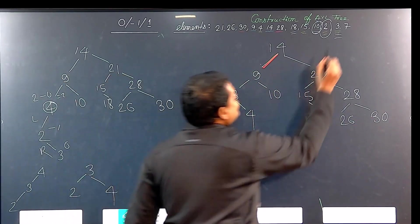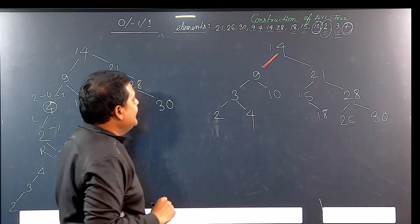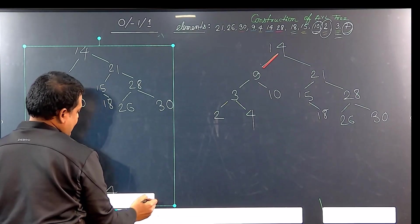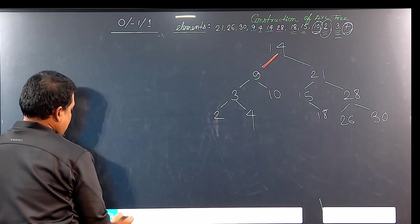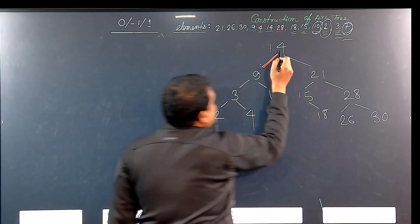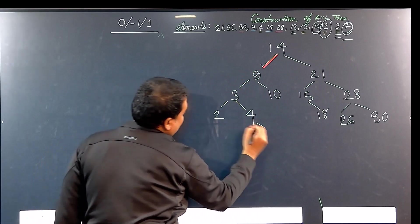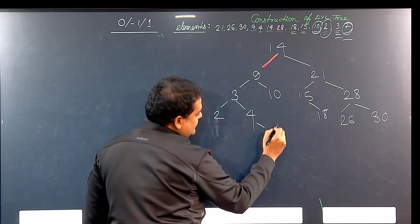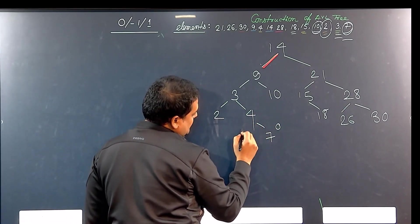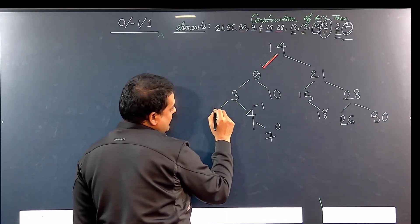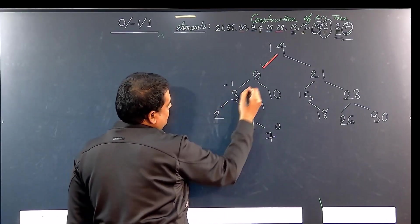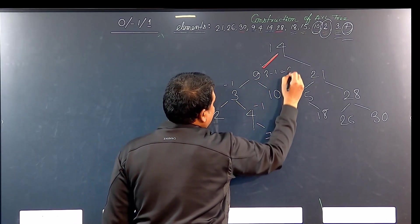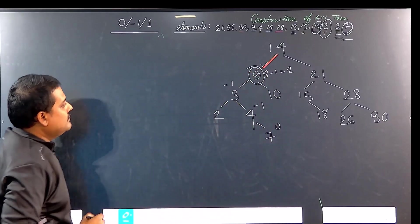The next element is 7. Where will 7 be inserted? It is less than 9, greater than 4, so 7 is inserted to the right of 4. Let me check: 0, then minus 1, then 1, then 1 minus 2 = minus 1, then 1, 2, 3, then 3 minus 1 is 2 — that is a problem at this node.